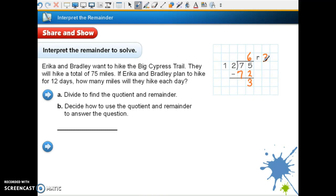Okay? So we divide it to find our quotient, which is 6, and our remainder, which is 3. Decide how to use the quotient and remainder to answer the question. If Erica and Bradley plan to hike 12 days, how many miles will they hike each day? Well, can we use just the quotient? If we use just the quotient, they'll have those 3 miles that they didn't hike. So we can't do that. It's not a question that asks how many miles will they have left over after 12 days. So we must need to write this one as a fraction. And don't forget, when we write it as a fraction, we use our quotient. Then we put our remainder over our divisor. Now this can be simplified. We can divide 3 and 12 by 3. So 3 divided by 3 is 1. And 12 divided by 3 is 4.